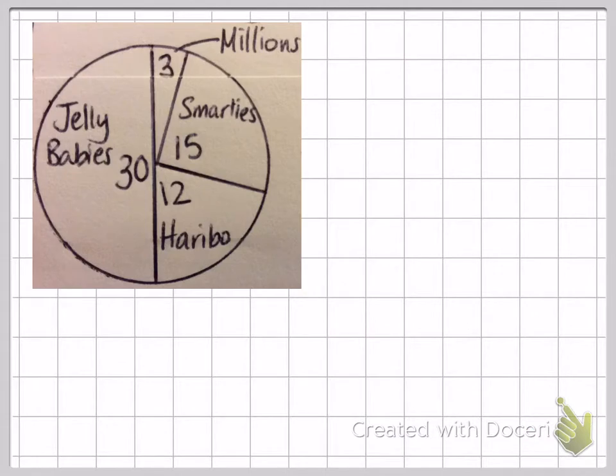Here's an example. Again, we'll talk about something yummy to put us off the fact that it's a stinky rat bag. Let's talk favorite sweets: Jelly Babies, Millions, Smarties, and Haribo. So here we've got a group of children who've been asked, what's your favorite type of sweets?